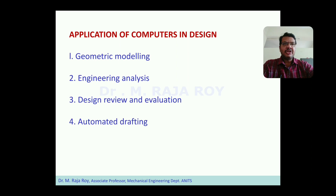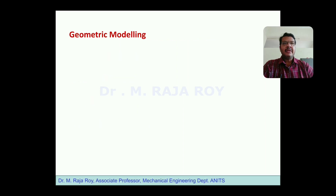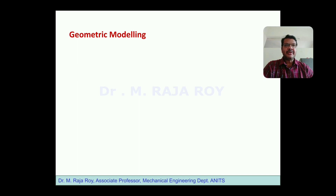First we will see what is Geometric Modeling. In the design process, the first part is Synthesis. Synthesis means the preliminary ideas we will prepare — various rough ideas depending on the conceptualization. While preparing these rough ideas, we used to prepare physical prototypes earlier, around 20 to 50 years back. A physical prototype is the scaled model of the actual object.